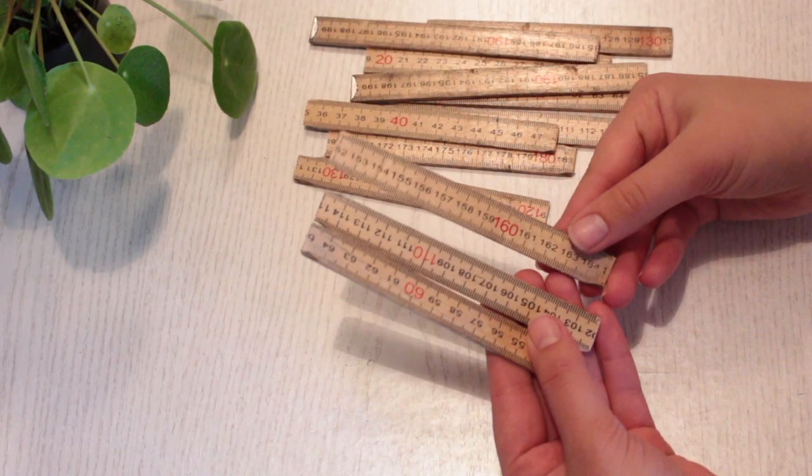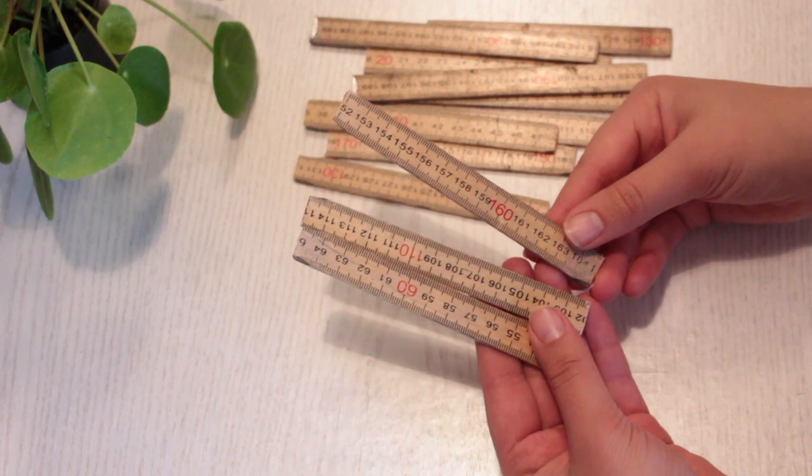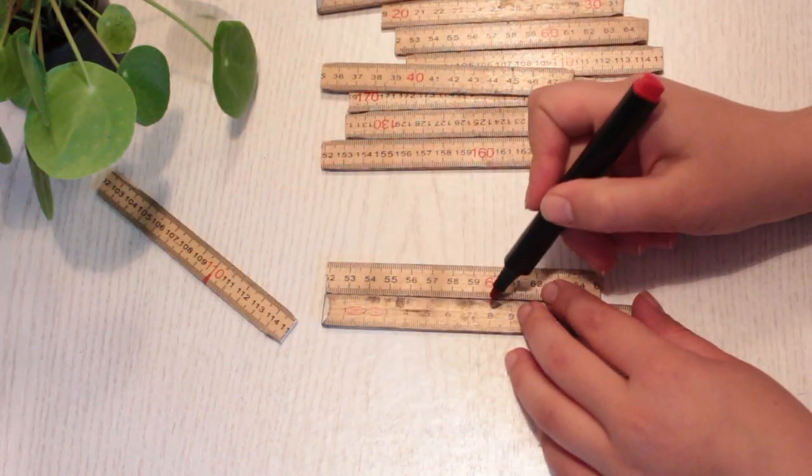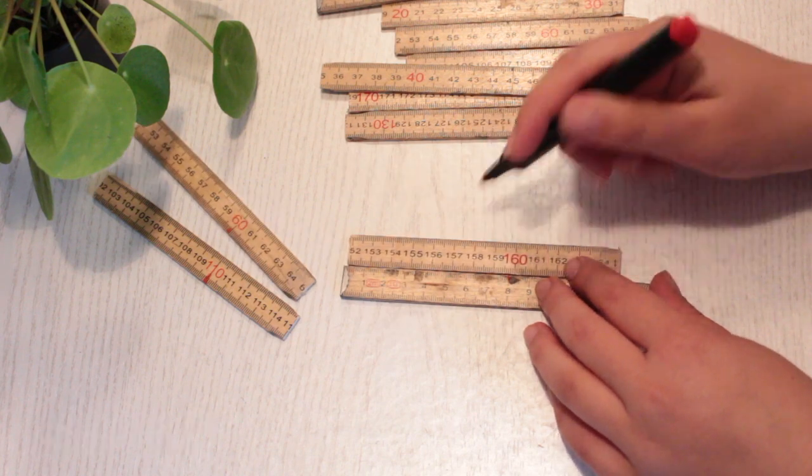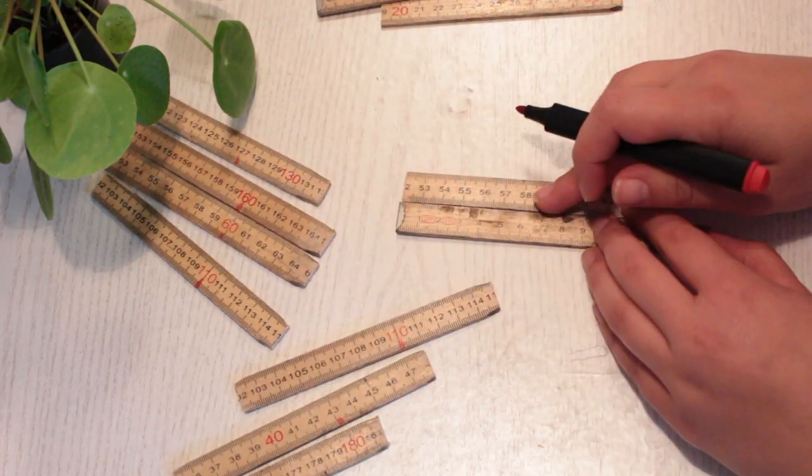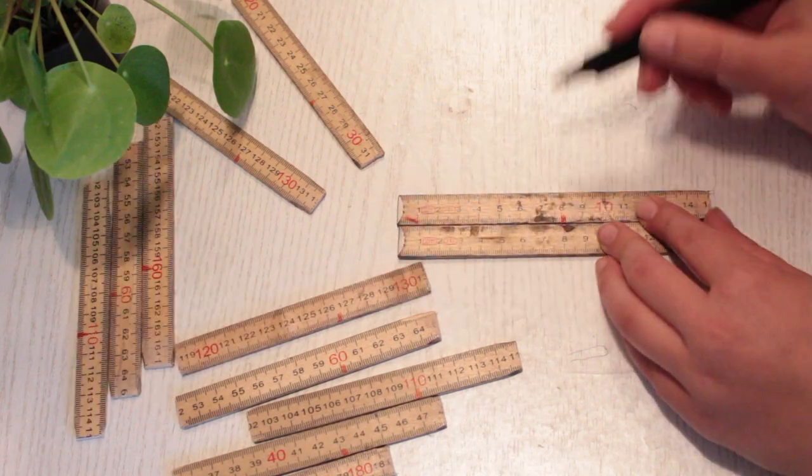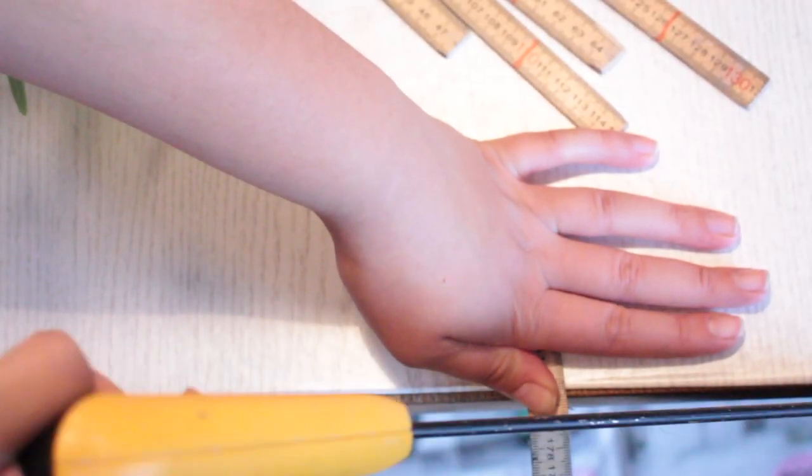Now we need to make sure that all sides of the planter are equal in height. So take all of the sticks and measure out 8 cm and make a mark. Continue doing this with all of the sticks, then saw them to pieces right at the marking.